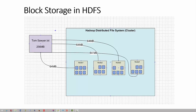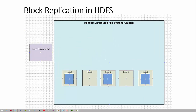In this example, the file is divided into four blocks, assuming a block size of 64 MB or 128 MB, and these blocks are written to various nodes in the cluster. The exact mechanism of where the blocks are placed depends on the application, various cluster settings, and also on the block replication mechanism.